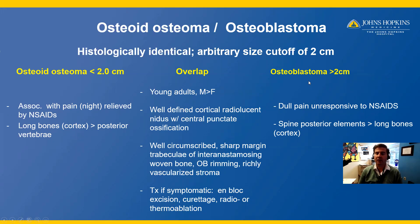Osteoblastomas, on the other hand, are larger than two centimeters. Typically, patients will complain of dull pain that is unresponsive to NSAIDs. Osteoblastomas are more common in the posterior elements of the spine, more so than in long bones and the cortex.